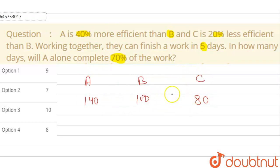So the efficiency ratio is what? Efficiency ratio is 7, 5, and 4. Right? This is the efficiency ratio of A, B, and C.